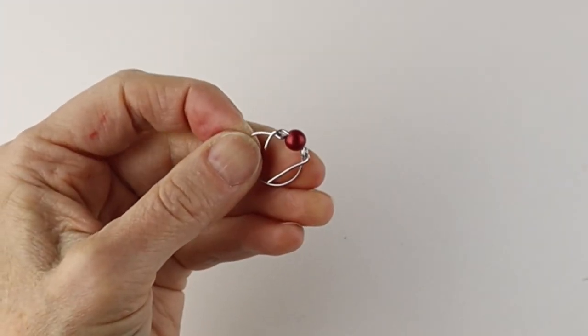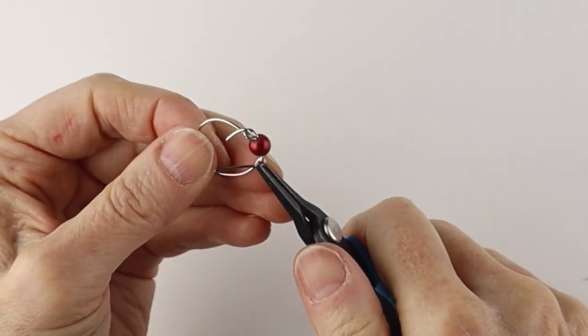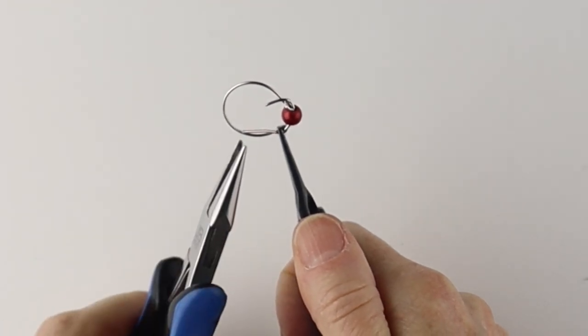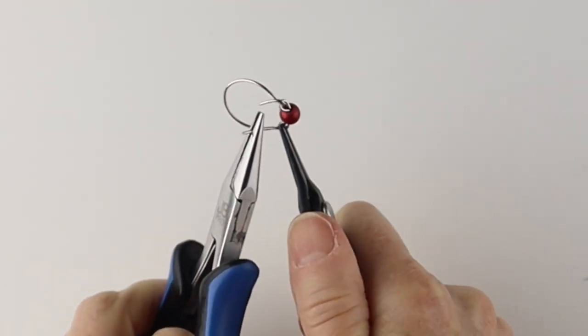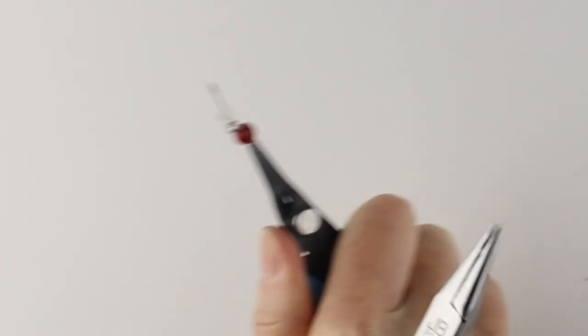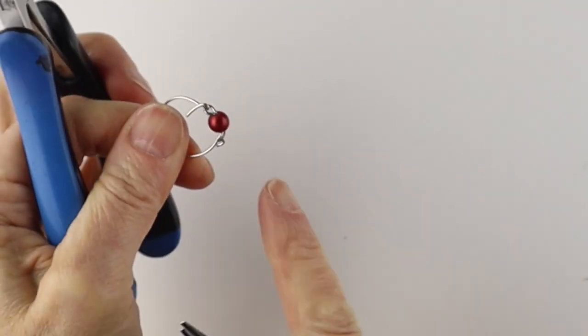Now you've got these ends. So if you have memory wire cutters, you can cut them with the memory wire cutters. Otherwise you can hold it with the tweezer nose pliers. And if the end is short, grab it with another pair of pliers and just bend it back and forth until it snaps and you're going to push that in there so it's flush.